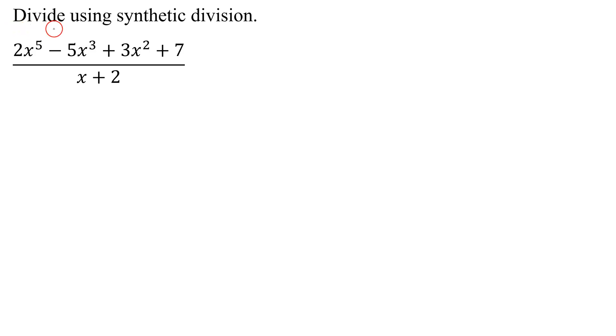In this problem we need to divide using synthetic division. I have the fifth degree polynomial 2x to the fifth minus 5x cubed plus 3x squared plus 7, and it's divided by the binomial x plus 2.